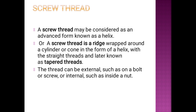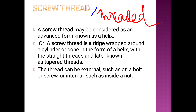Now let's start with the screw thread terminology. A screw thread is a ridge wrapped around a cylinder or cone in the form of a helix — with a straight thread and also tapered threads. Nut, bolt, and screw use screw threads as a temporary fastening method.